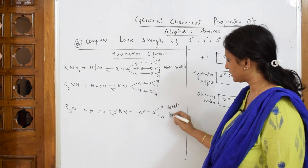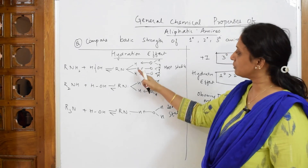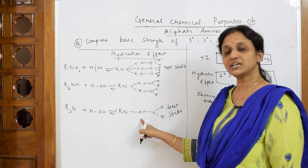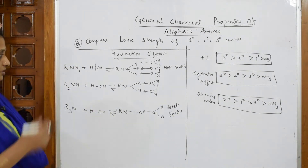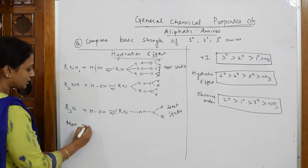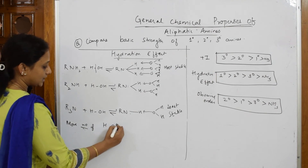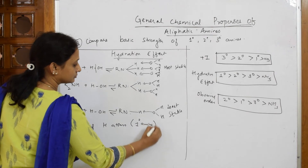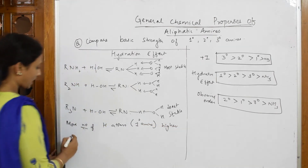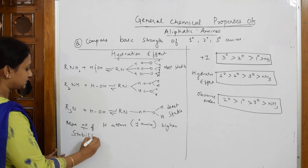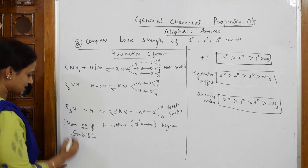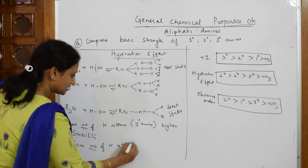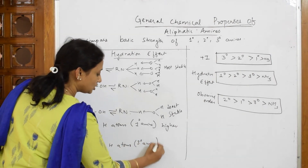Observe carefully: more number of hydrogen atoms means more stability; fewer hydrogen atoms means lesser stability, because fewer hydrogen bonds can form. More hydrogen atoms — as in primary amine — gives higher stability. Fewer hydrogen atoms — as in tertiary amine — gives low stability.